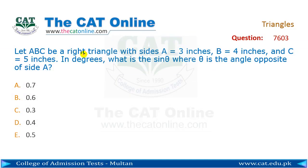Let ABC be a right angle triangle with sides A equal to 3 inches, B equal to 4 inches, and C equal to 5 inches. In degrees, what is sine theta, where theta is the angle opposite to side A?